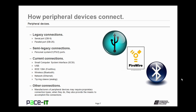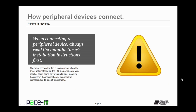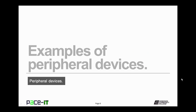Now, the manufacturer of a peripheral device may require a proprietary connection type. When they do, they will also provide the means of accomplishing that connection to the PC. So, when you're connecting a peripheral device to a computer, always read the manufacturer's installation instructions first. The major reason for that is to determine when the device driver gets installed on the PC, as some operating systems and peripheral devices are very particular about driver installation order. Installing the driver in the incorrect order can result in frustration due to loss of functionality.